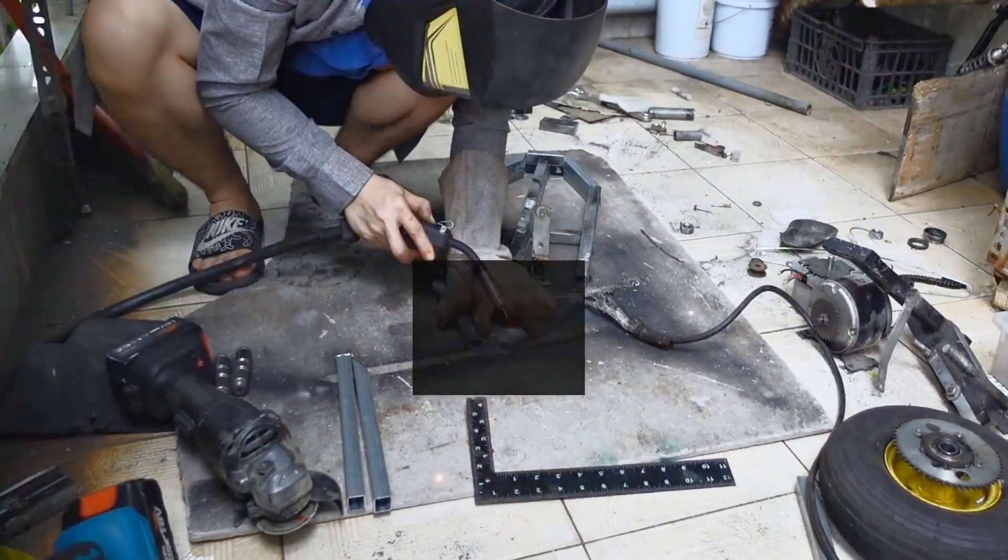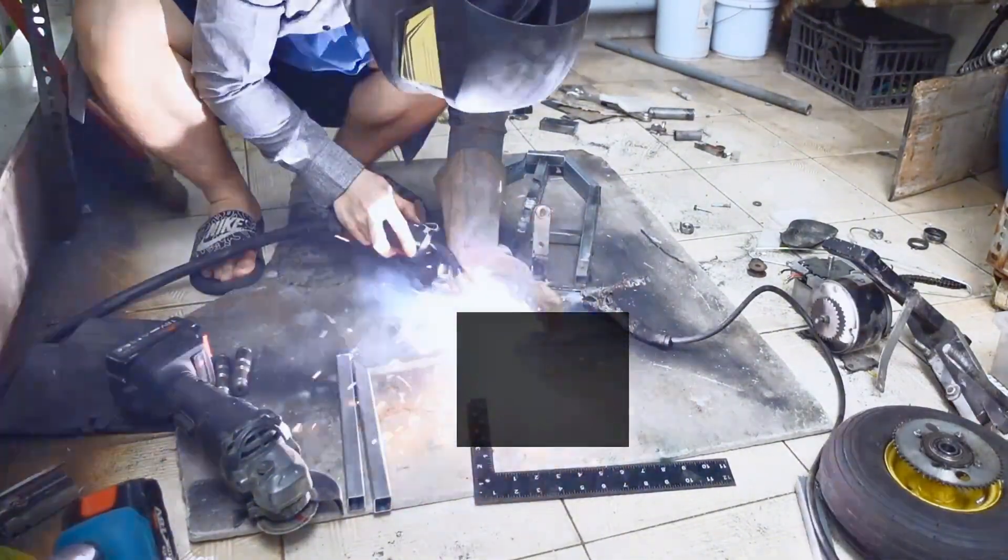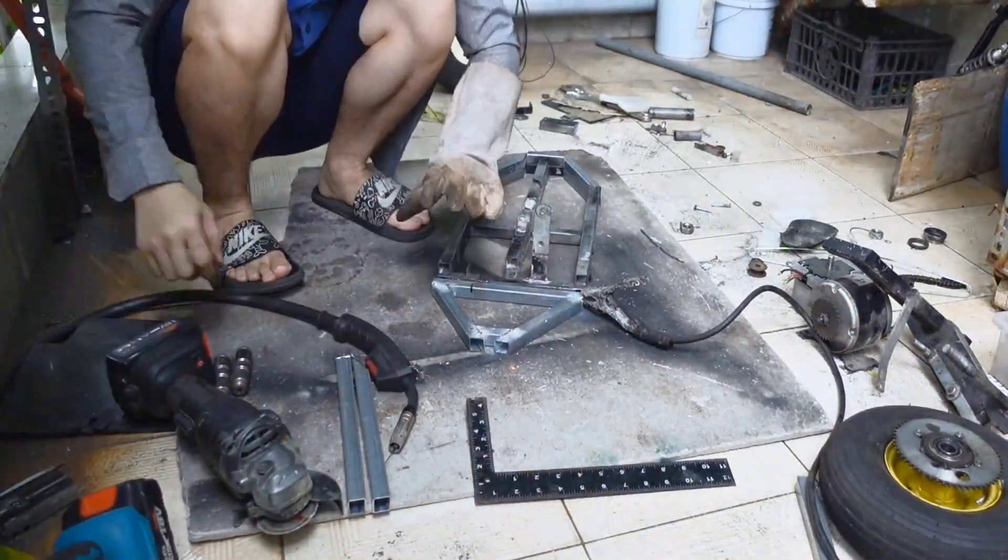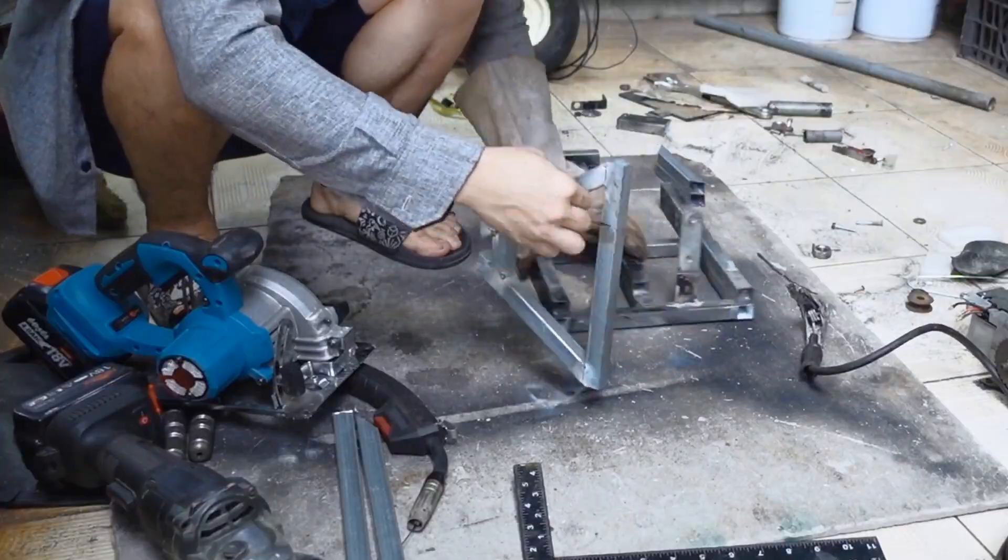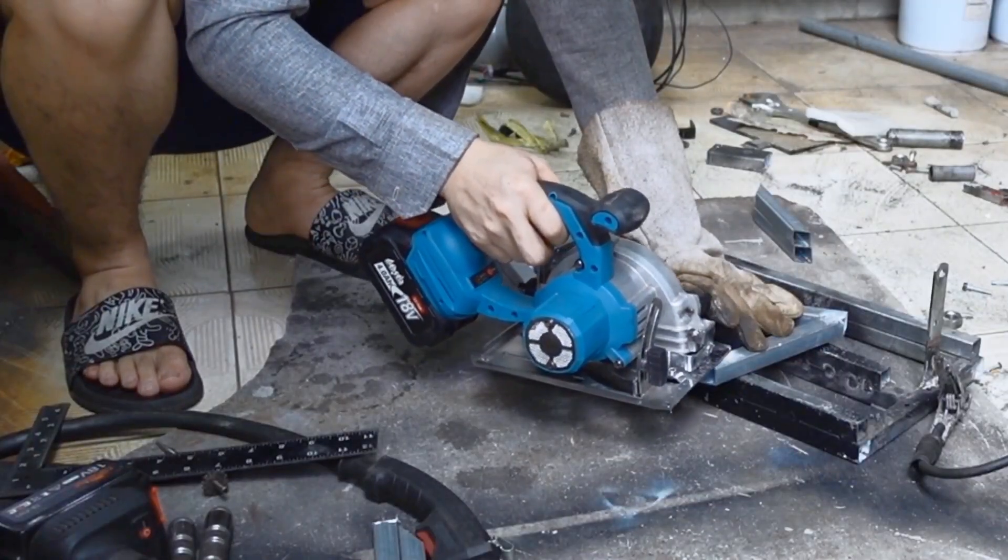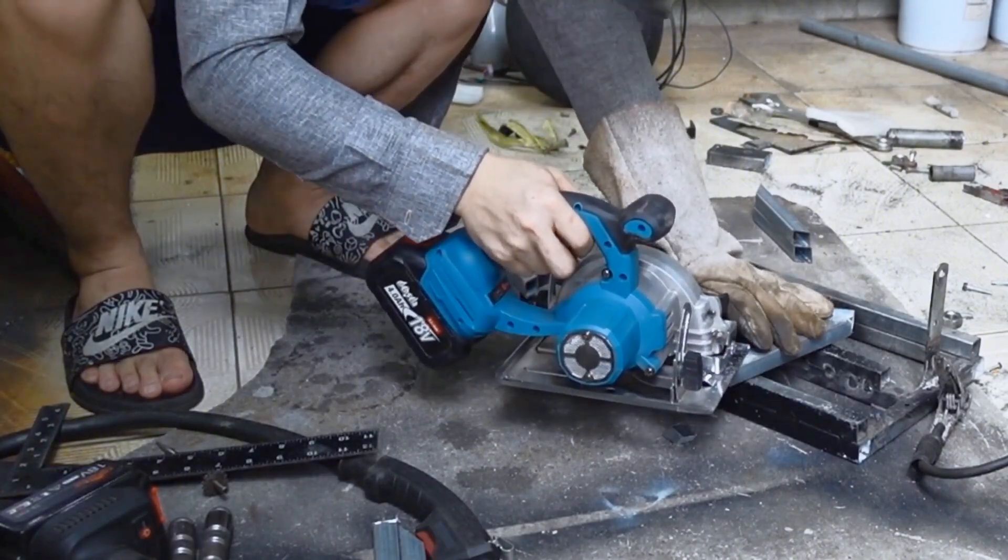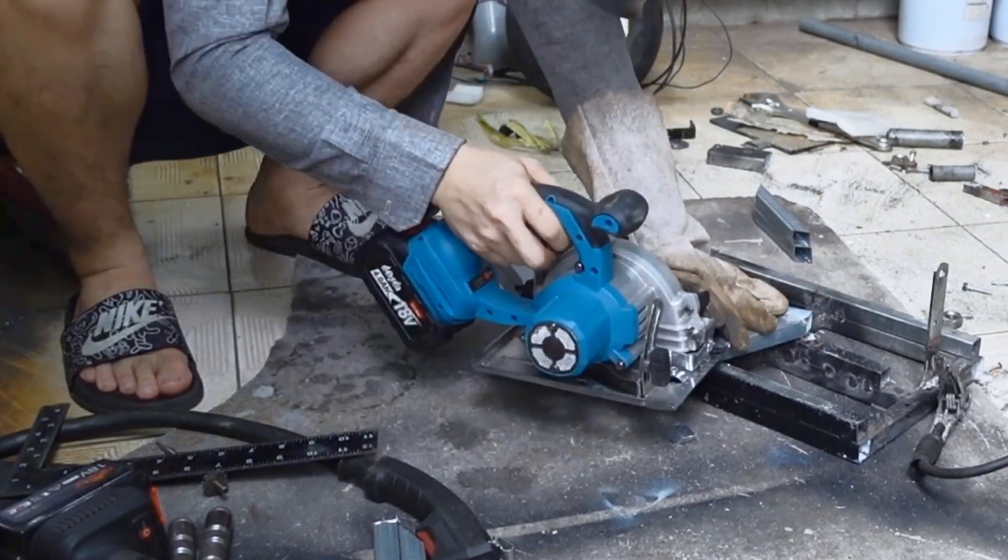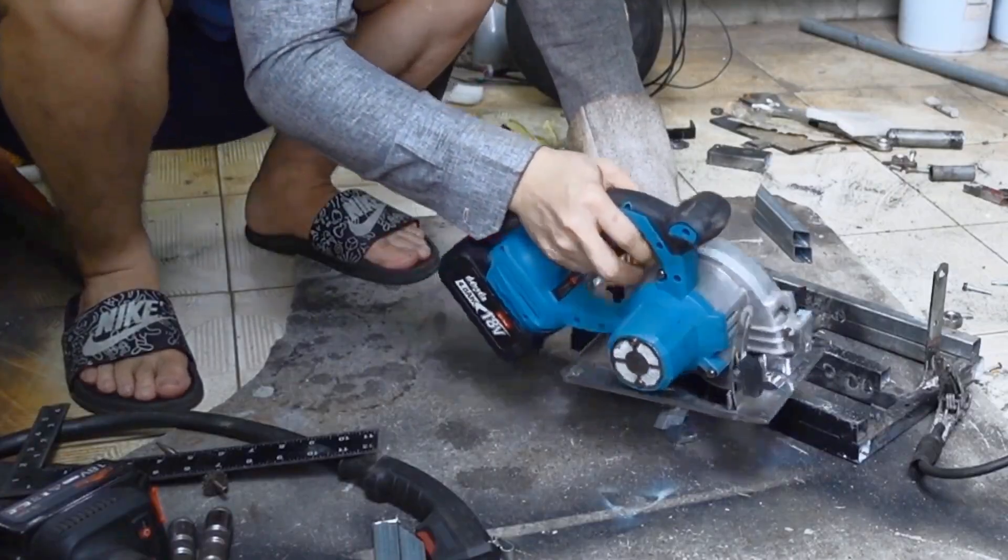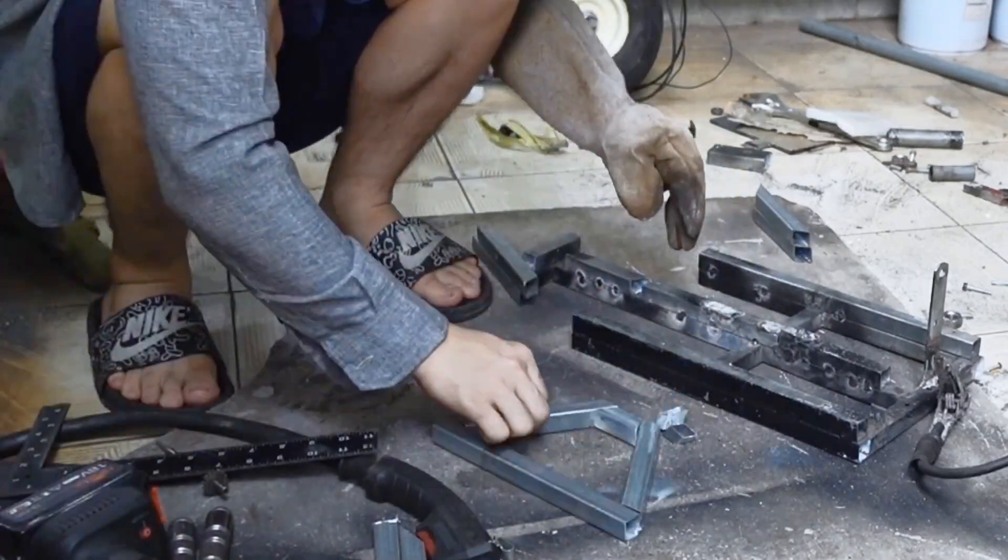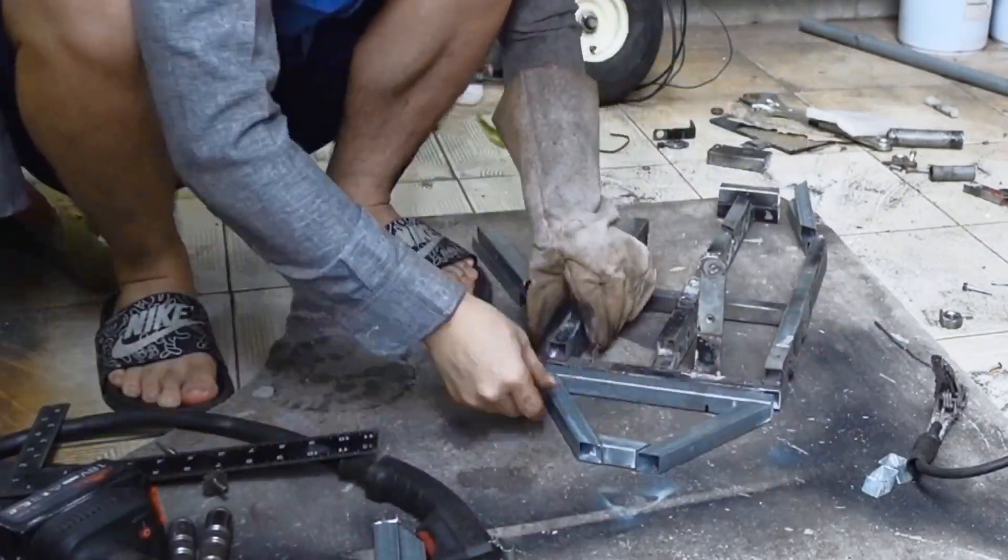I've always believed that great things don't need to be expensive, just resourceful. So when I decided to build my own car from scratch, I didn't go for shiny new parts. Instead, I raided junkyards, scrap piles, and forgotten garages. The mission? Construct a fully functional car frame and suspension system using nothing but salvaged metal and ingenuity.